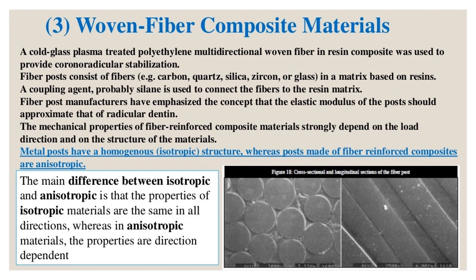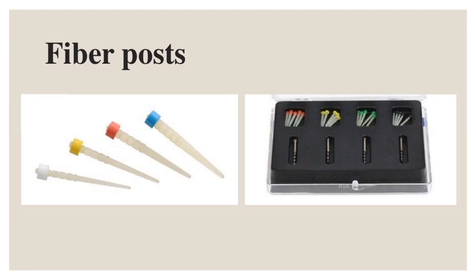Woven fiber composite materials: a cold glass plasma-treated polyethylene multi-directional woven fiber in resin composite was used to provide corono-radicular stabilization. Fiber posts consist of fibers (carbon, quartz, silica, zircon, or glass) in a resin matrix; a coupling agent (probably silane) connects the fibers to the matrix. Fiber post manufacturers emphasize that the elastic modulus should approximate that of radicular dentin. Metal posts have a homogeneous isotropic structure, whereas fiber reinforced composite posts are anisotropic — meaning their properties are direction-dependent.